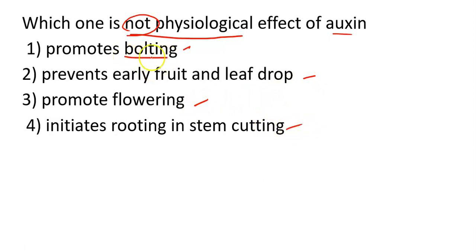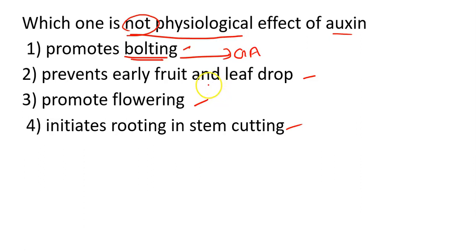If you connect bolting to a hormone, you connect it to gibberellic acid — bolting and malting are both functions of gibberellic acid. Promoting bolting is therefore NOT a function of auxin. So our answer will be Option 1.